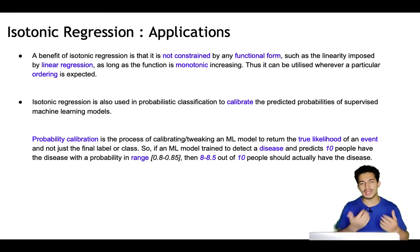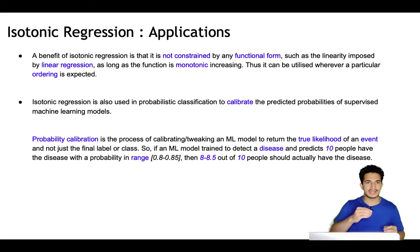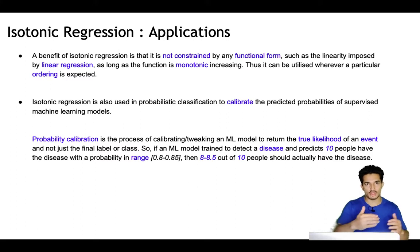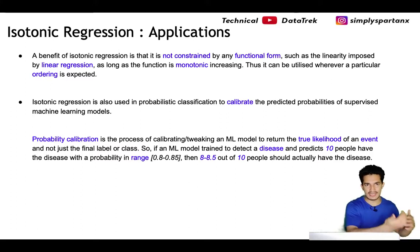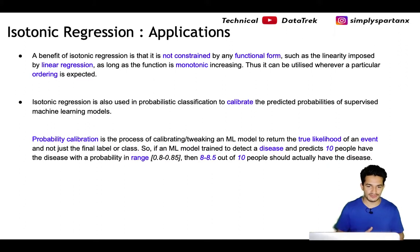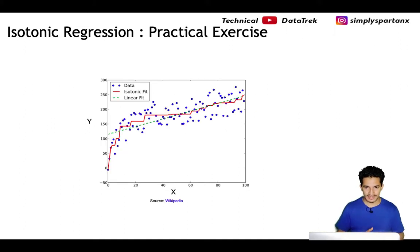So if we want calibrated probabilities on top of any sophisticated model we've trained, isotonic regression can help calibrate those probabilities. It's used as a mapping on top of the model probabilities, agnostic of the underlying model, to calibrate them. This is another very important use case of isotonic regression.